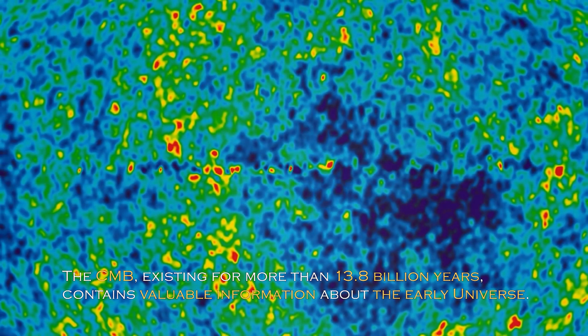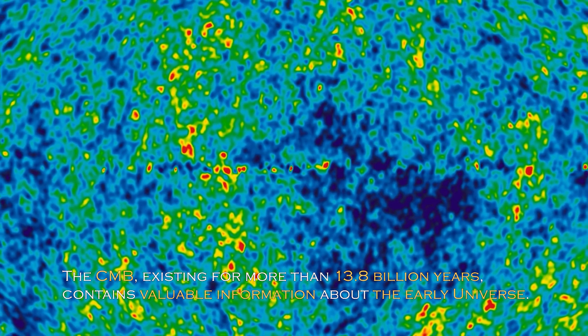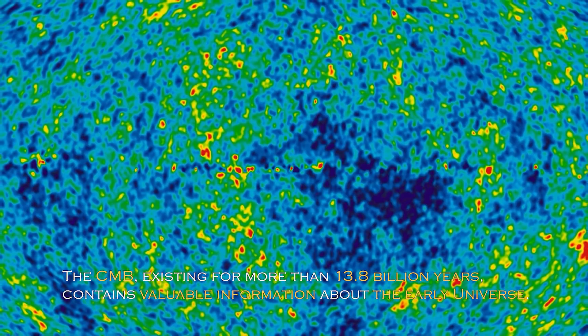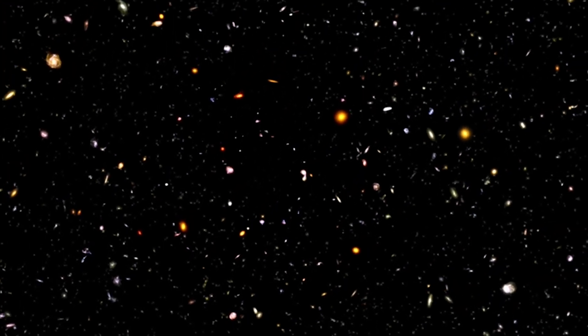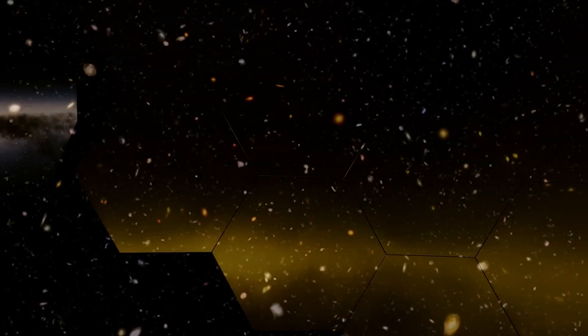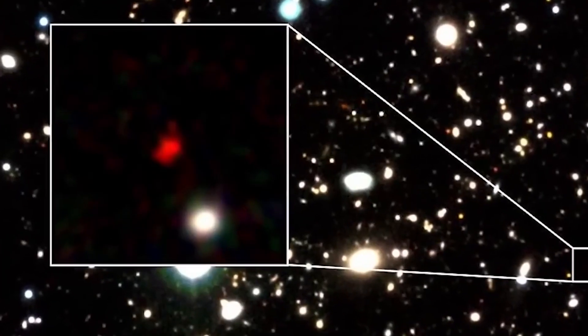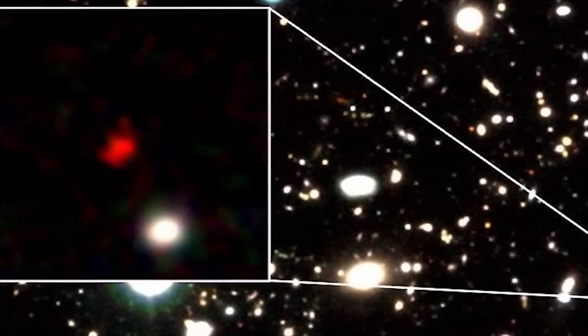The CMB, existing for more than 13.8 billion years, contains valuable information about the early universe. Over the years, theories defining the evolution of the universe have undergone remarkable changes due to new discoveries and advances in research technology. These findings have required adjustments to existing theories and, on occasion, the creation of new theories.